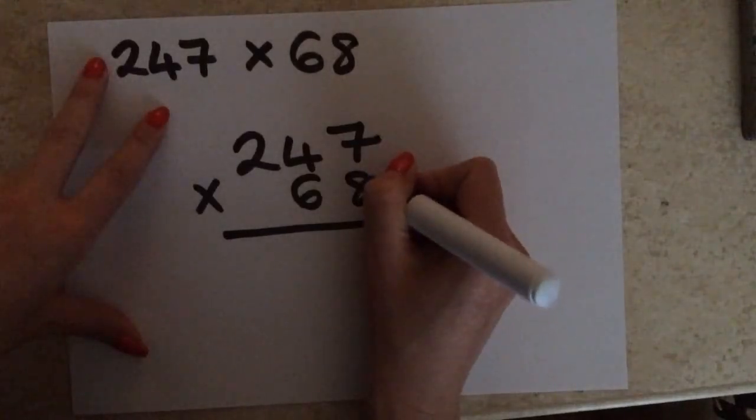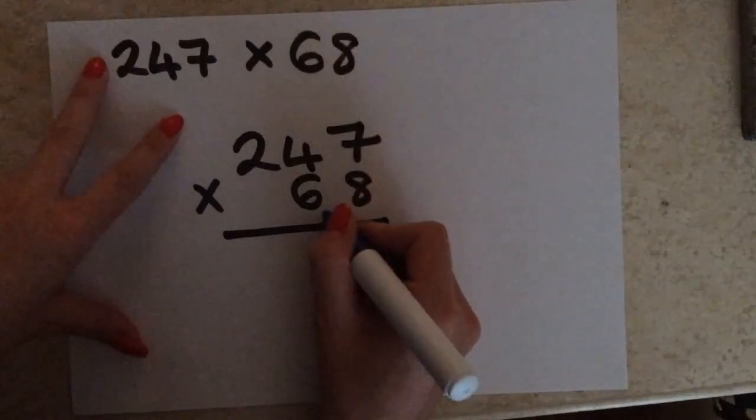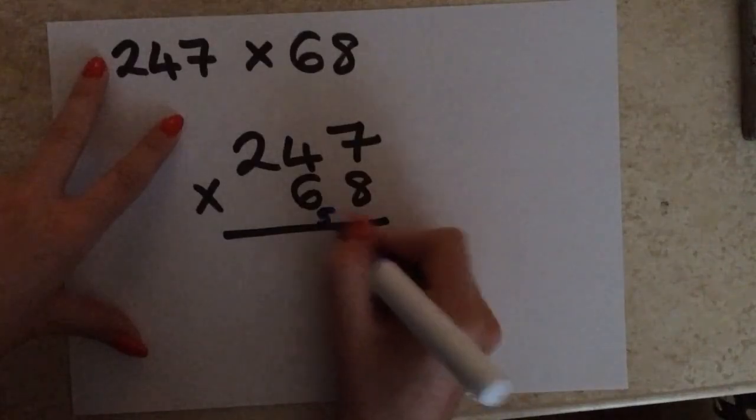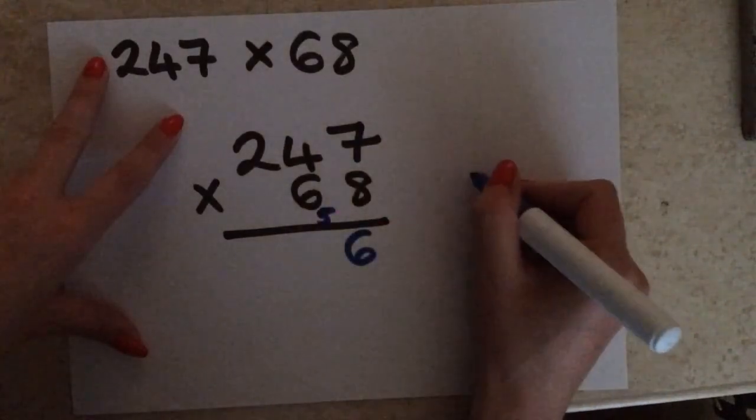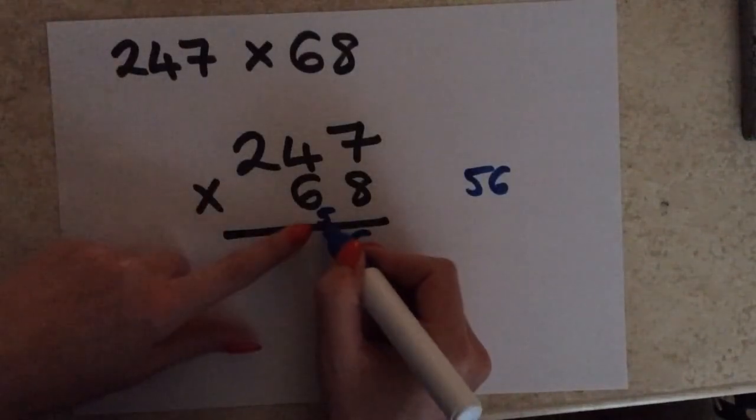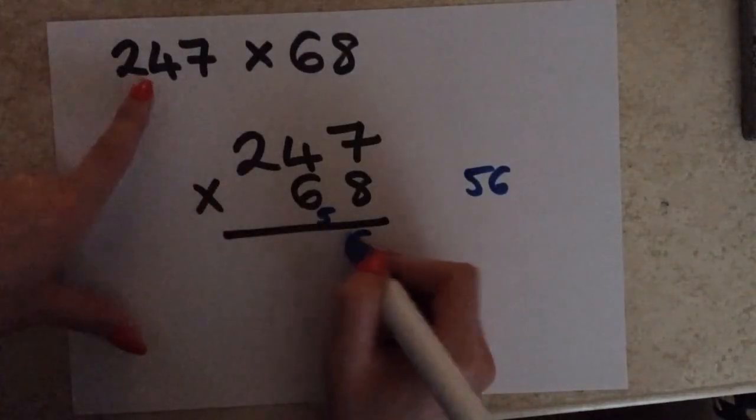So, we'll start with the 8. So, we've got 8 times 7, which is going to give me 56. Carrying that 5 over. And again, what I said previously, is if you want to jot that number down on the side, just to make sure that you're carrying the correct number over, so it still reads as 56.